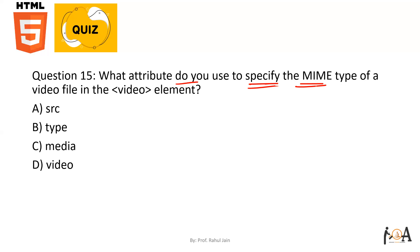Question number fifteen: which attribute do you use to specify the MIME type of a video file? MIME stands for Multimedia Internet Mail Extension — it relates to the multimedia type of a video file. The attribute we use inside the video tag for specifying the MIME type is 'type'. So 'type' is the correct attribute.